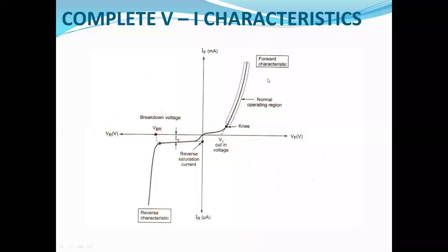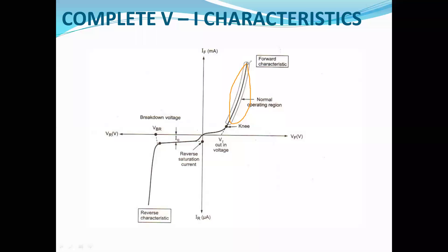This is the complete VI characteristic graph of the PN junction diode, combining the forward bias and reverse bias characteristics. The knee voltage is the point at which current starts conducting — at the knee voltage, the diode starts conducting. This is the normal operating region of the diode, as we generally use the diode in forward bias condition.